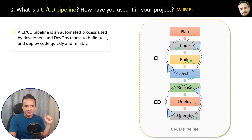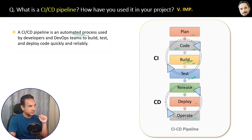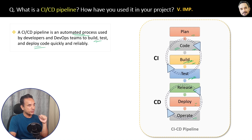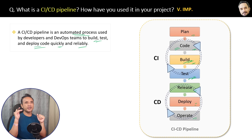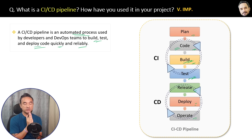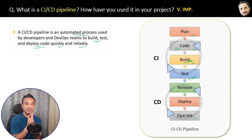Here is the definition: a CI/CD pipeline is an automated process used by developers and DevOps teams to build, test, and deploy code quickly and reliably. Now you will ask: what are the tools used by AWS to perform these CI/CD pipeline steps? That I will cover in the upcoming question.